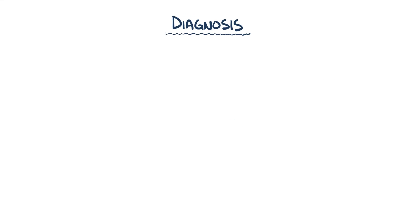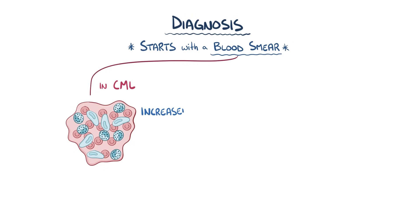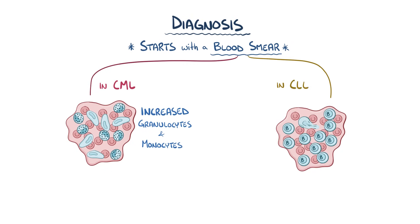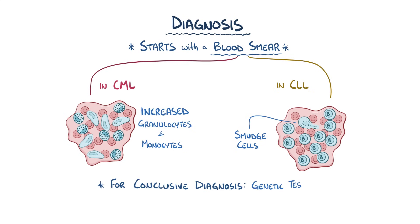The diagnosis of CML and CLL usually starts with a blood smear, which shows a lot of premature leukocytes. In CML, there are an increased number of granulocytes and monocytes, and in CLL there are often smudge cells on the blood smear, which are immature B cells that have broken during the smear. For a conclusive diagnosis, genetic testing can be done to look for the Philadelphia chromosome in CML and to look for chromosomal defects in CLL.